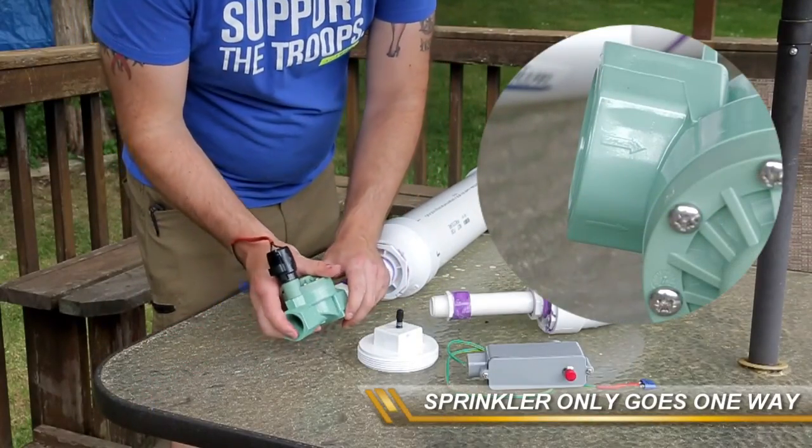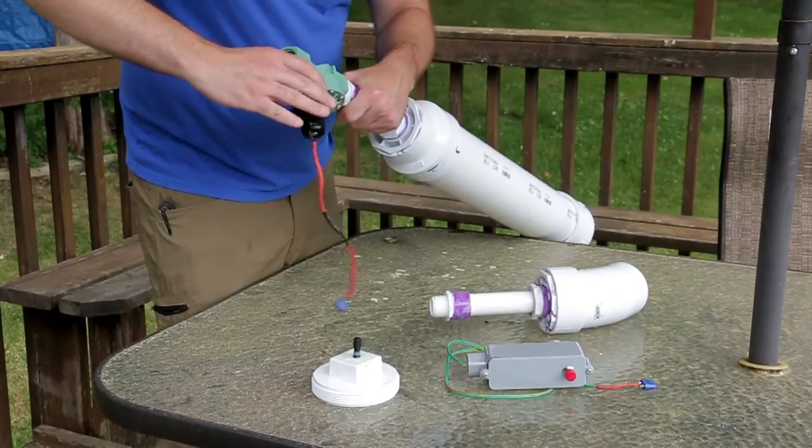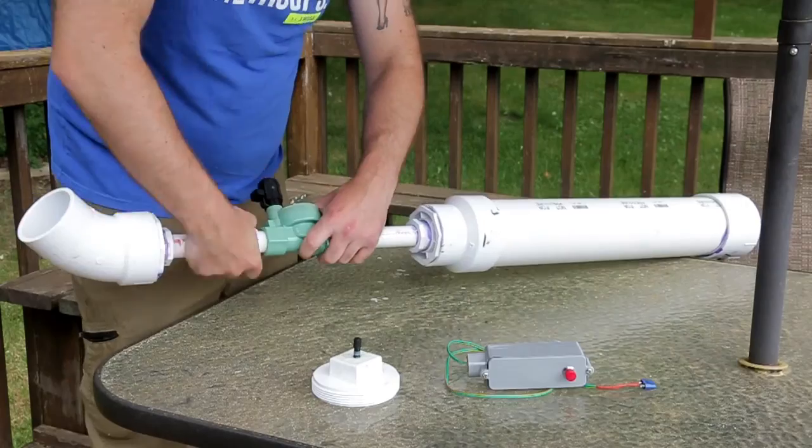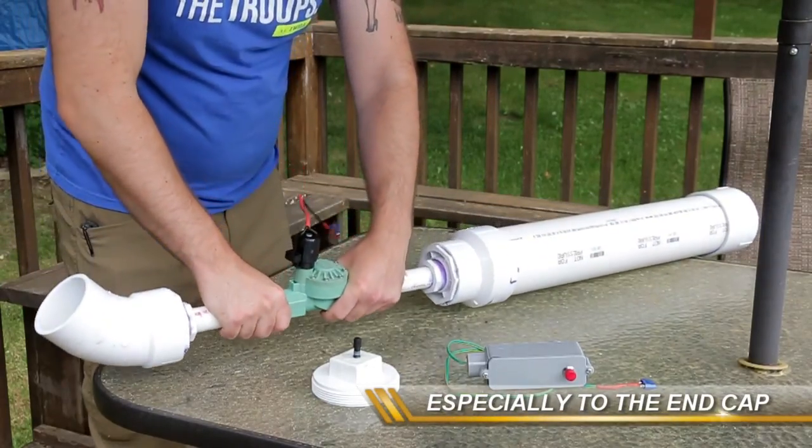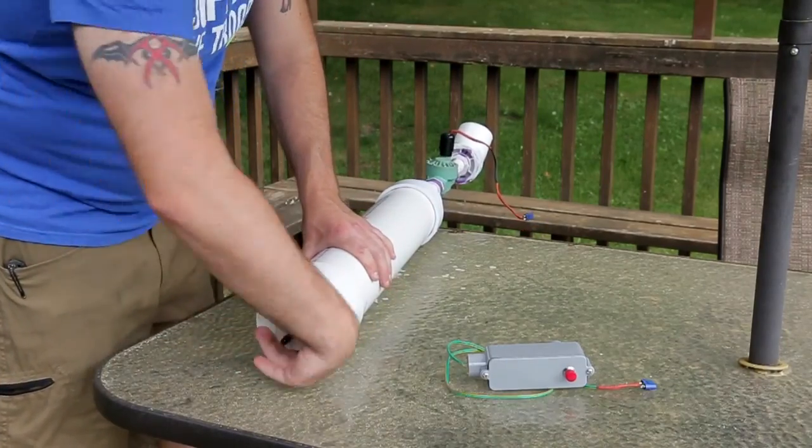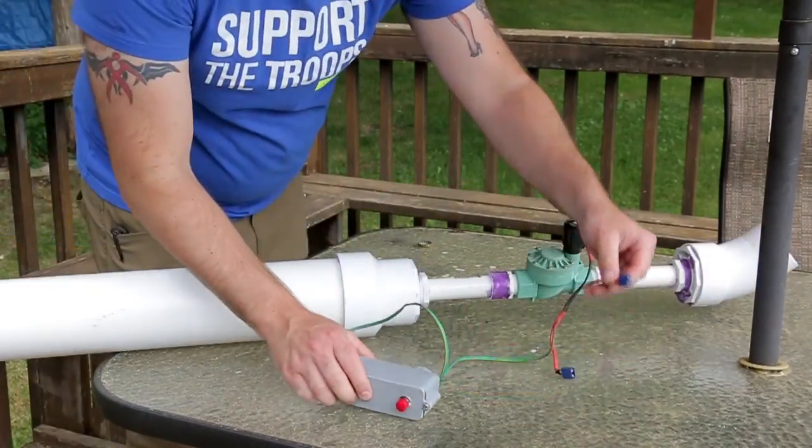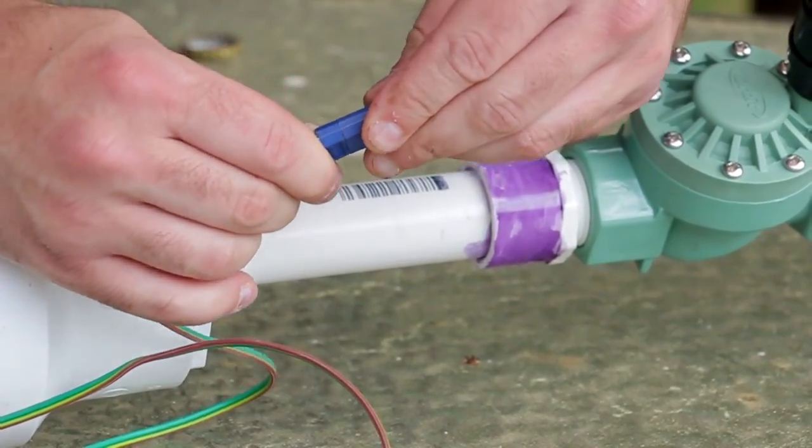Assembling the cannon is very easy. Just thread on all the pieces righty tighty lefty loosey. Make sure to use some Teflon tape on the threaded pieces as it will prevent leaks. Connect your trigger to the cannon and test the switch. If it's working, you should hear a click.